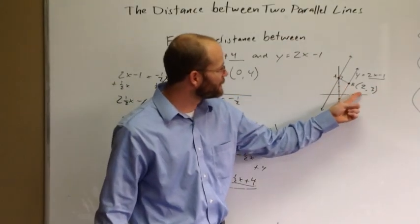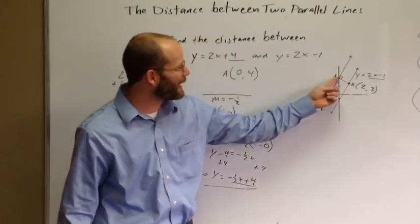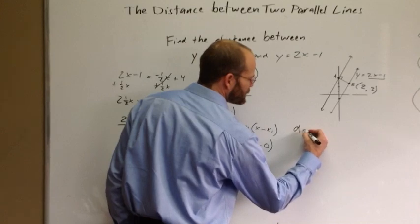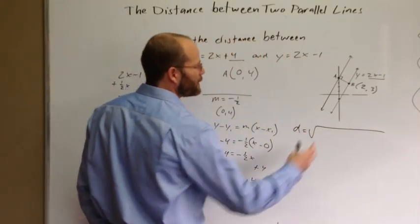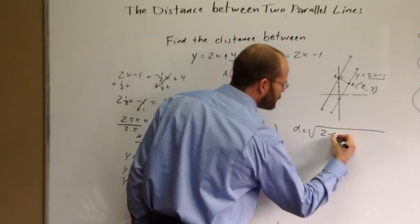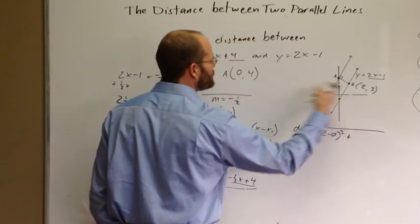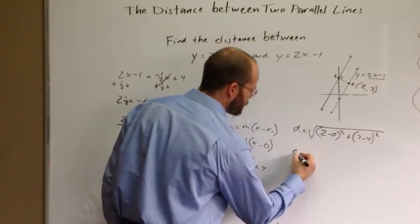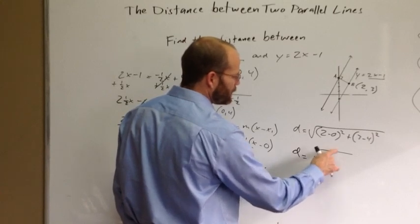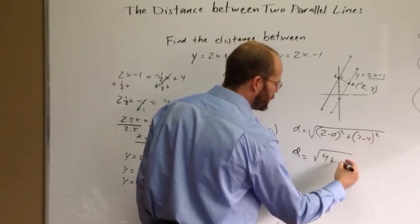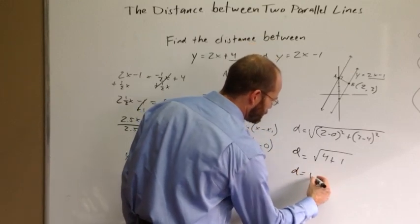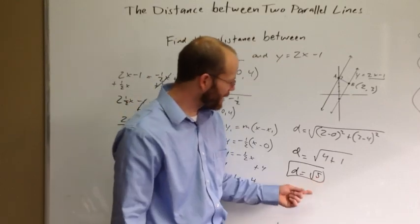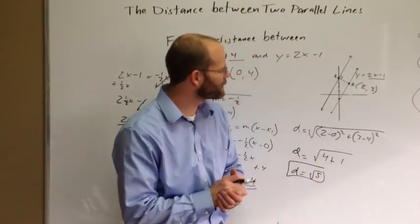Now that we know the coordinates of B, which is (2, 3), and A, which is (0, 4), we can use the distance formula: the square root of (x₂ minus x₁)² plus (y₂ minus y₁)². D equals the square root of (2 minus 0)² plus (3 minus 4)², which gives the square root of 4 plus 1, so D equals the square root of 5. That's how we find the distance between two parallel lines.